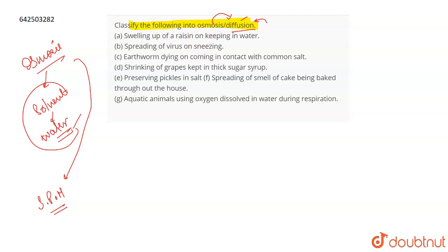If we talk about each of these one by one, the first is swelling up of a raisin on keeping it in water. That is osmosis because the movement of solvent which is water is taking place from a region of high concentration to a region of low concentration.